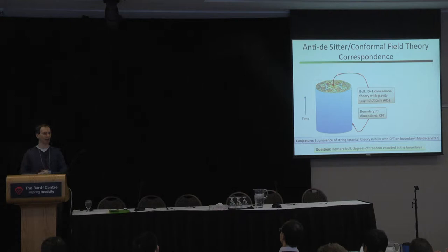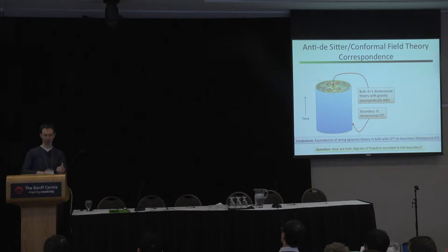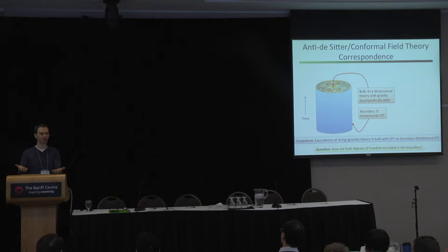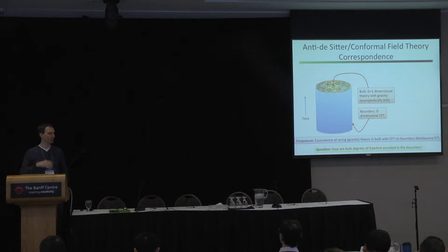The other half of the correspondence is just a quantum theory that lives on the boundary — and it's a quantum theory with no gravity in it. You can imagine it as a bunch of qubits. In this case, the boundary has one spatial dimension, so think of just a ring of qubits that interact locally with some particular kind of interaction. The boundary theory is a conformal field theory, meaning it has a particular symmetry — basically a kind of scaling symmetry.